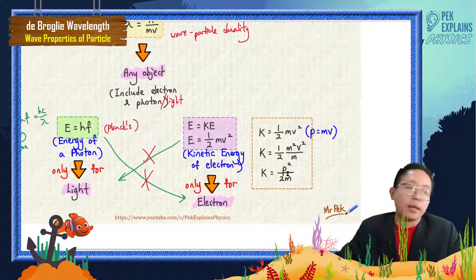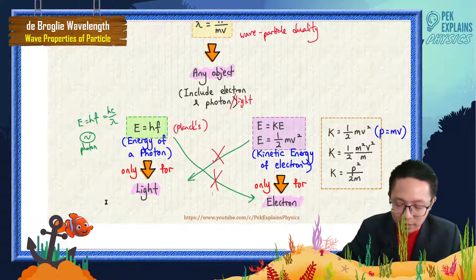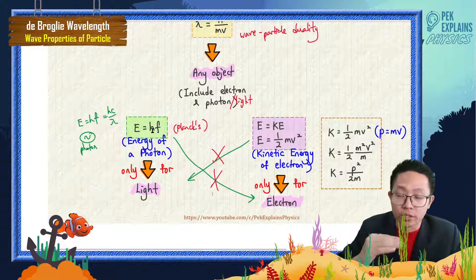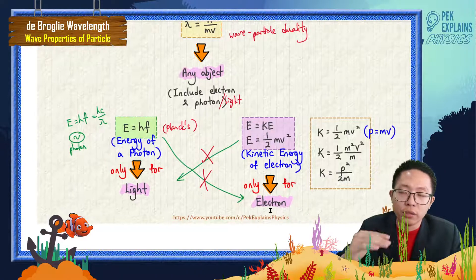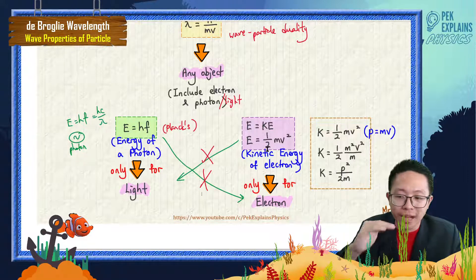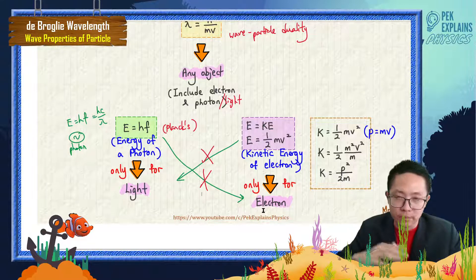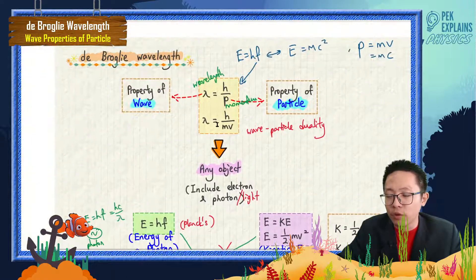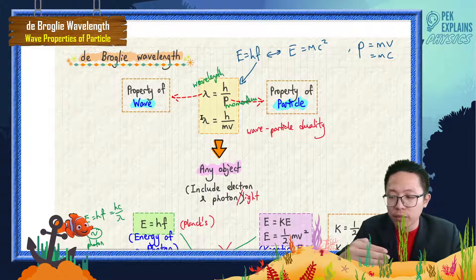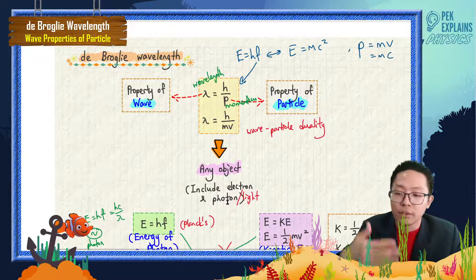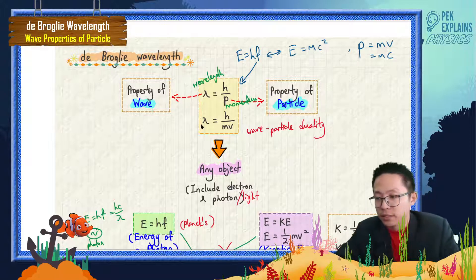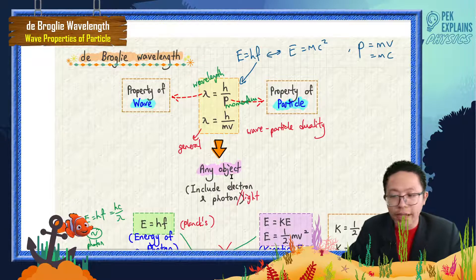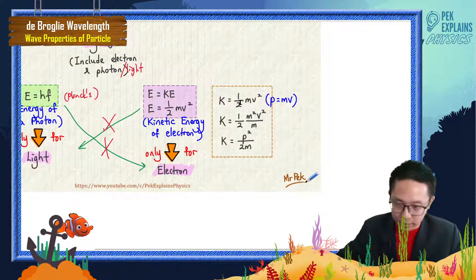To summarize: light only uses E = hf; electron only uses KE = ½mv². Don't mix them up. However, the de Broglie wavelength formula λ = h/p can be used for both — it is general for any object.